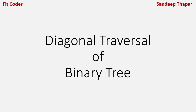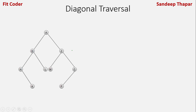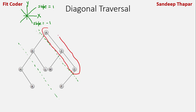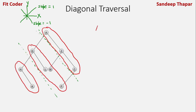In this video, we will discuss how we can find the diagonal traversal of a binary tree. To find the diagonal traversal, we draw lines of slope minus 1 in the tree. So we draw lines which have a slope of minus 1, and the diagonal traversal of this tree will be the nodes that lie within these lines. So the nodes are A, Z, C, then D, L, M, P, H and K. This will be the diagonal traversal of this tree.